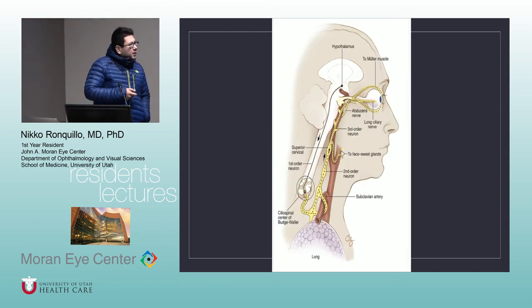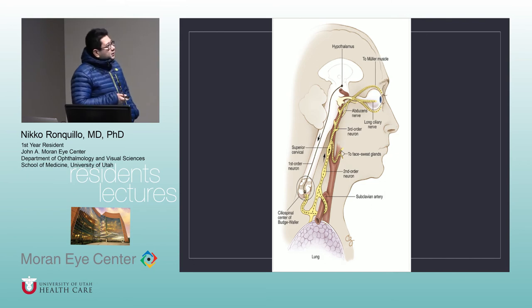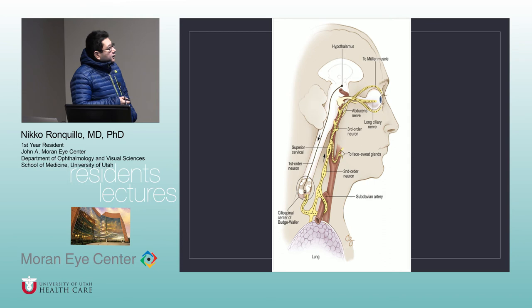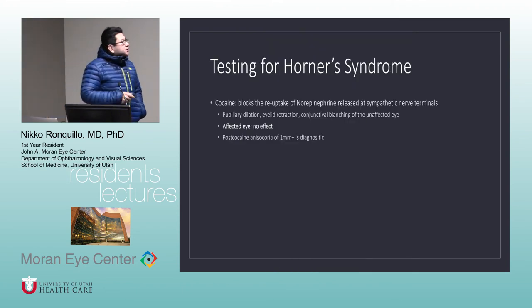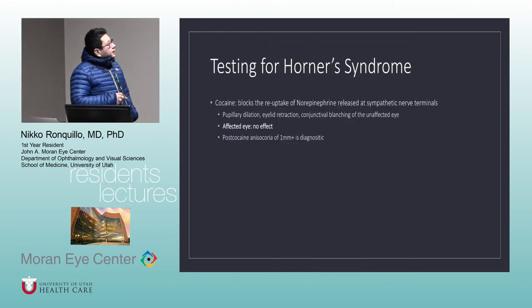For Horner syndrome, always remember the lesion is ipsilateral. The first-order neuron originates in the hypothalamus and descends from C7 to T2 at the ciliospinal center of Budge-Waller. The second-order neuron comes around and synapses in the superior cervical ganglion. The third-order neuron then ascends. Testing for Horner syndrome is very important.